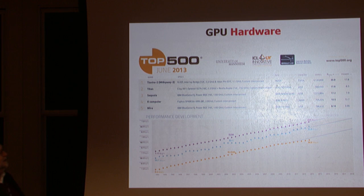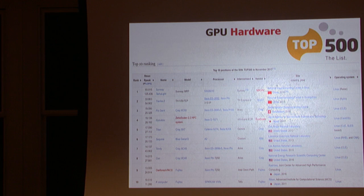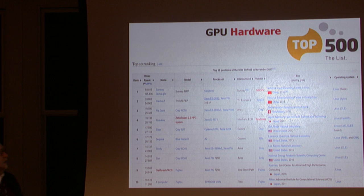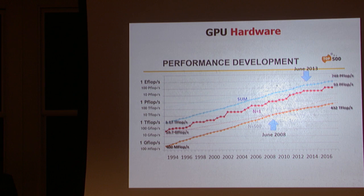Now I have a fresh Top 500 list — November 2017, just a few days ago. Again China dominates: the first and second positions are occupied by Chinese systems. Surprisingly, the Swiss system Piz Daint showed up, and after a big upgrade moving to the new Pascal GPU cards they reached third position. The biggest American system was pushed down to number five but is still in the top five.